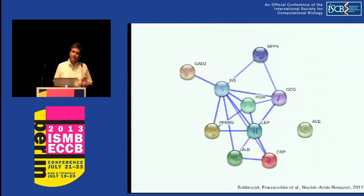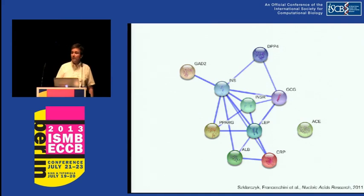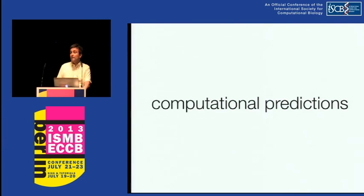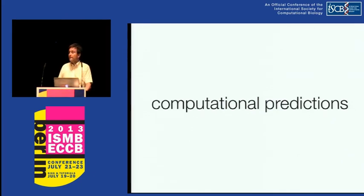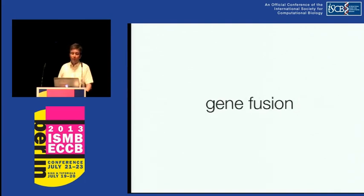What we have behind STRING in the current version is more than 1,000 genomes. One thing you can do based on that is to try to do computational predictions. There are a number of different ways that you can predict which genes or proteins are likely to be functionally associated, just based on having a large collection of genomes. I'll mention quickly one of the simplest ones, which is the gene fusion algorithm, just to give you an idea about how these algorithms work.